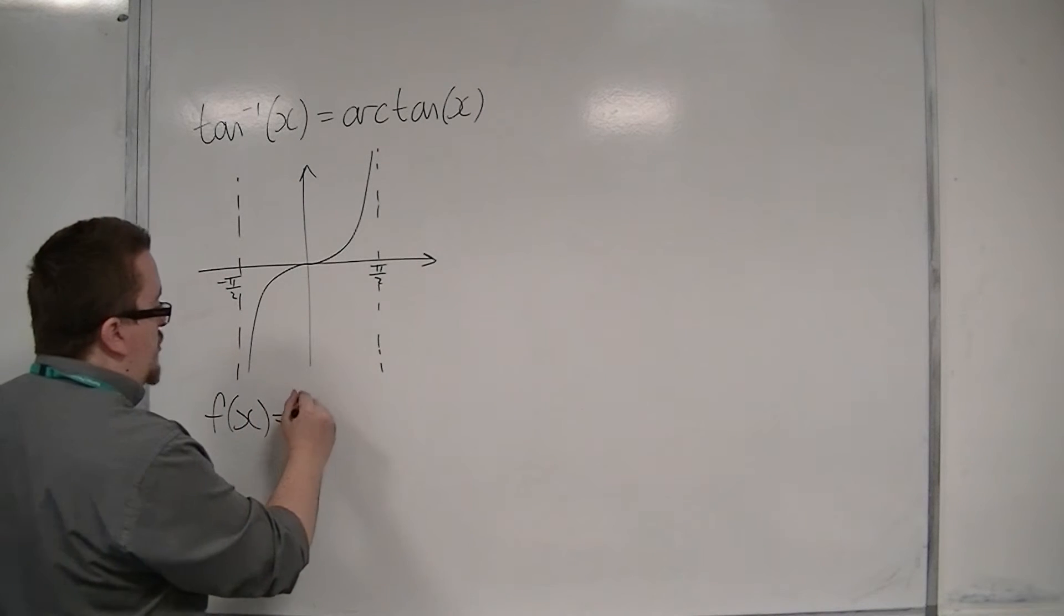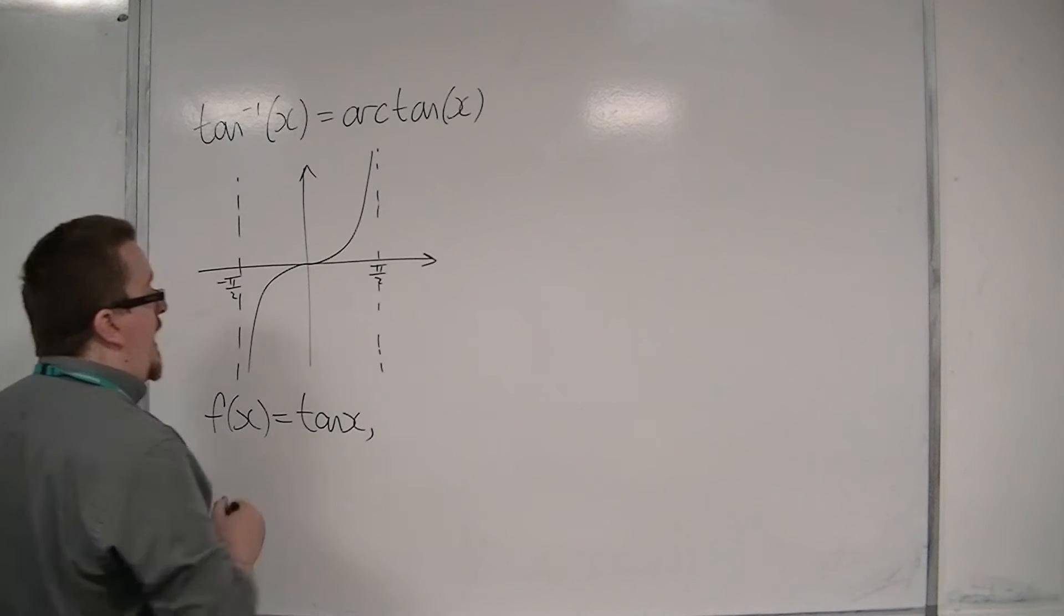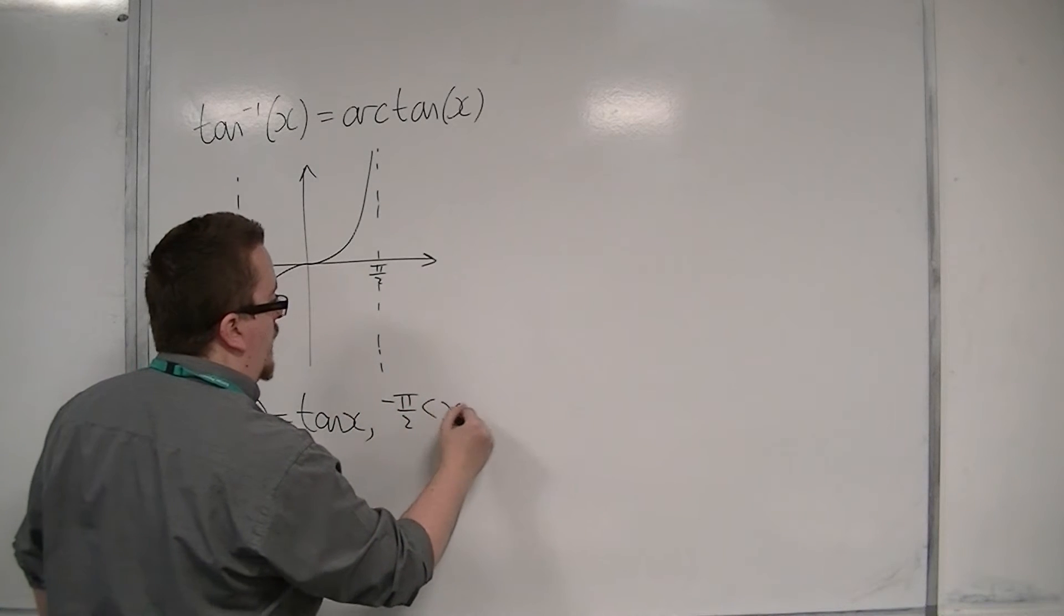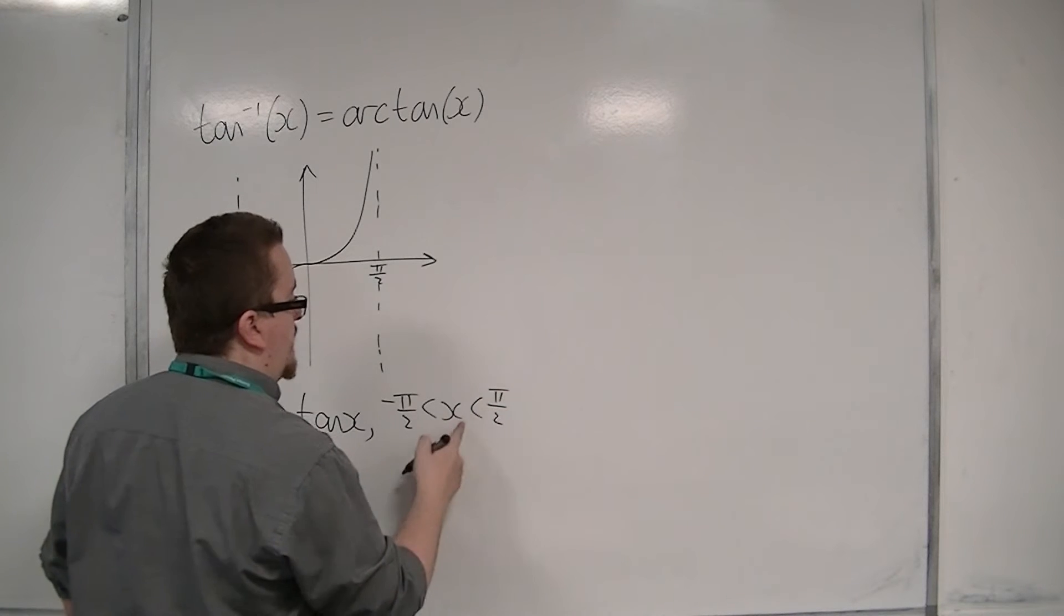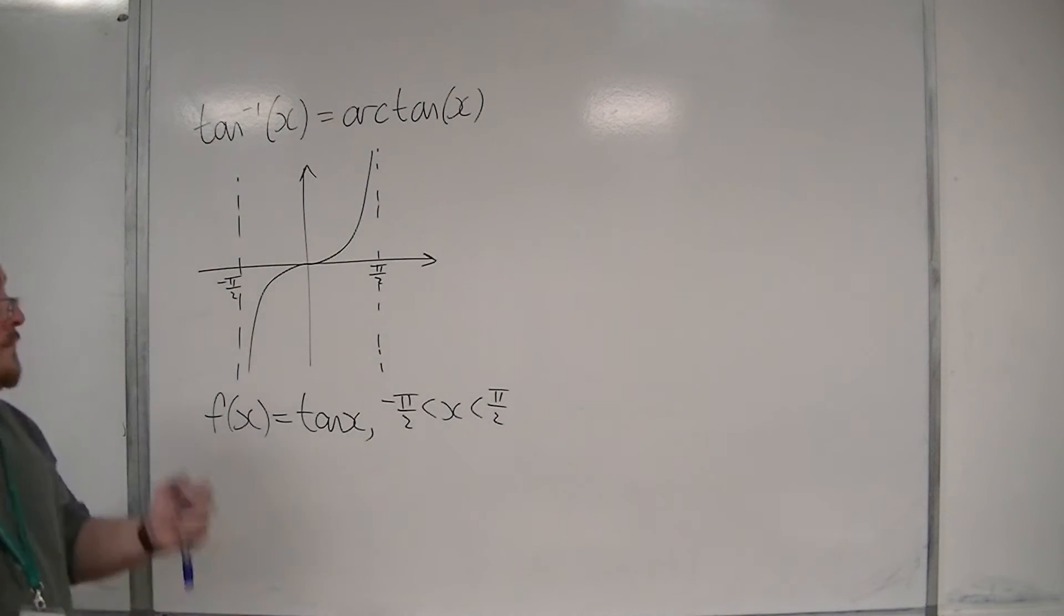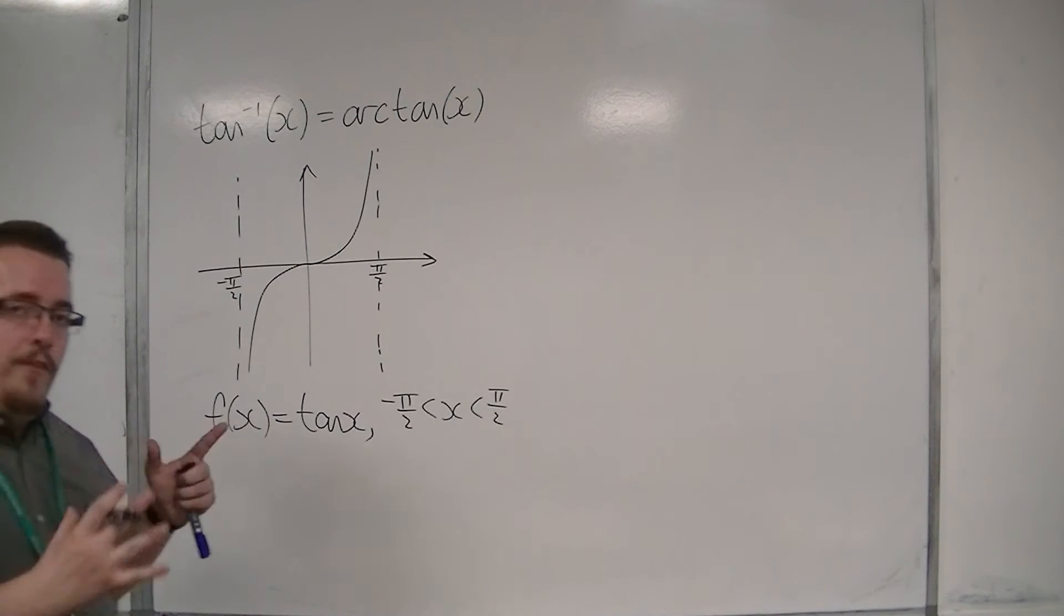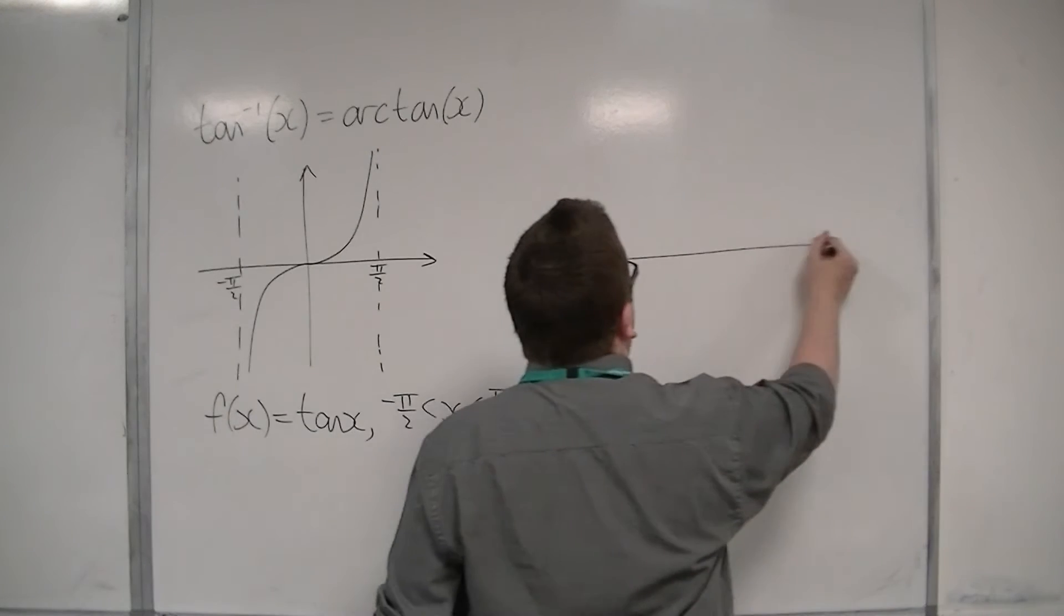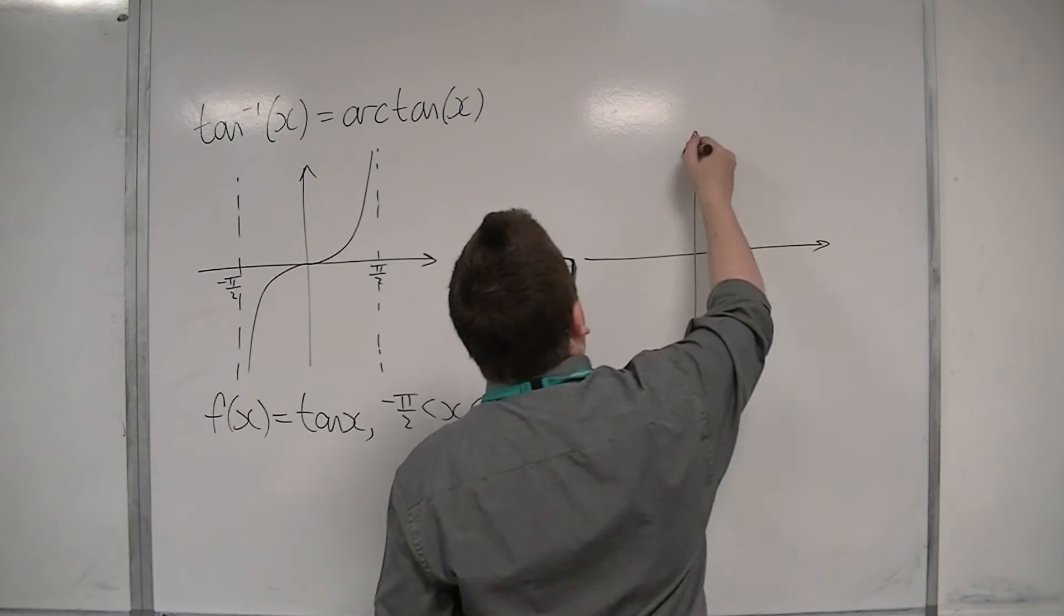So if I restrict the domain of tan x to be between minus pi over 2 and pi over 2, notice I don't have equality signs here because they're asymptotes there, then if I sketch y is equal to arc tan of x.